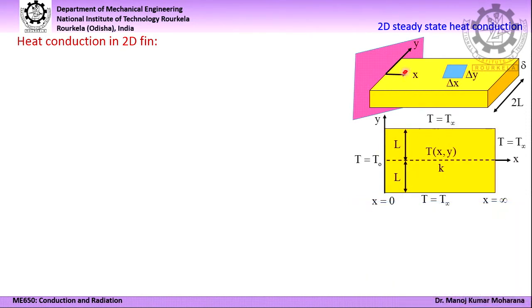This shows the top view of this three-dimensional geometry. Here we are considering the temperature is not varying along its thickness delta because delta is small compared to the other two dimensions. This is the line of symmetry shown here by the dotted line, so half of this part will be the analysis we carry out. On this base, the temperature equals the temperature of this hot surface — let it equal T0. Then on the surface at this tip, we consider temperature equal to the temperature of the ambient fluid because this length of the fin is very high.